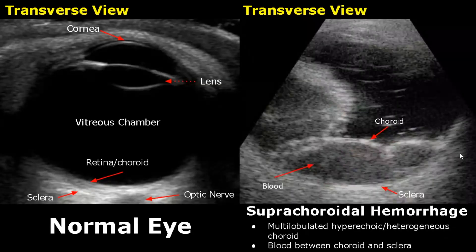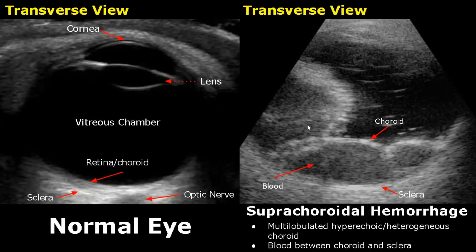Suprachoroidal hemorrhage refers to accumulation of blood between the choroid and the sclera. In most cases, we will see multilobulated hyperechoic or heterogeneous choroid.